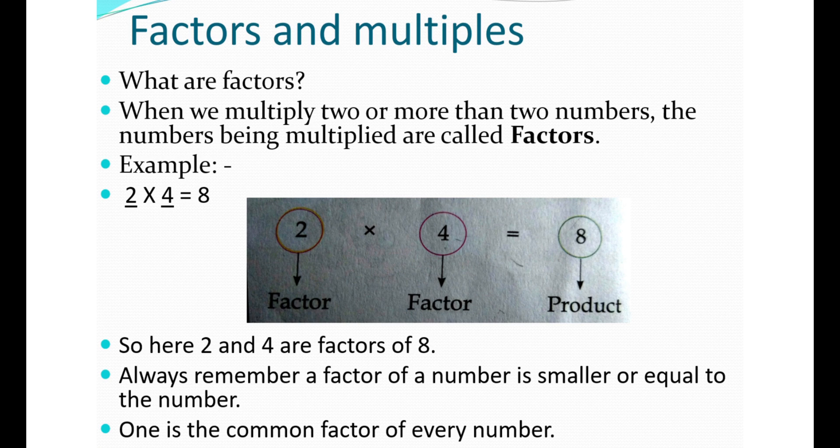Hello everyone, today we will be studying about factors and multiples. What are factors? When we multiply two or more than two numbers, the numbers being multiplied are called factors. For example, 2 × 4 = 8, so here 2 and 4 are factors of 8. Always remember, the factor of a number is smaller or equal to the number. One is the common factor of every number.